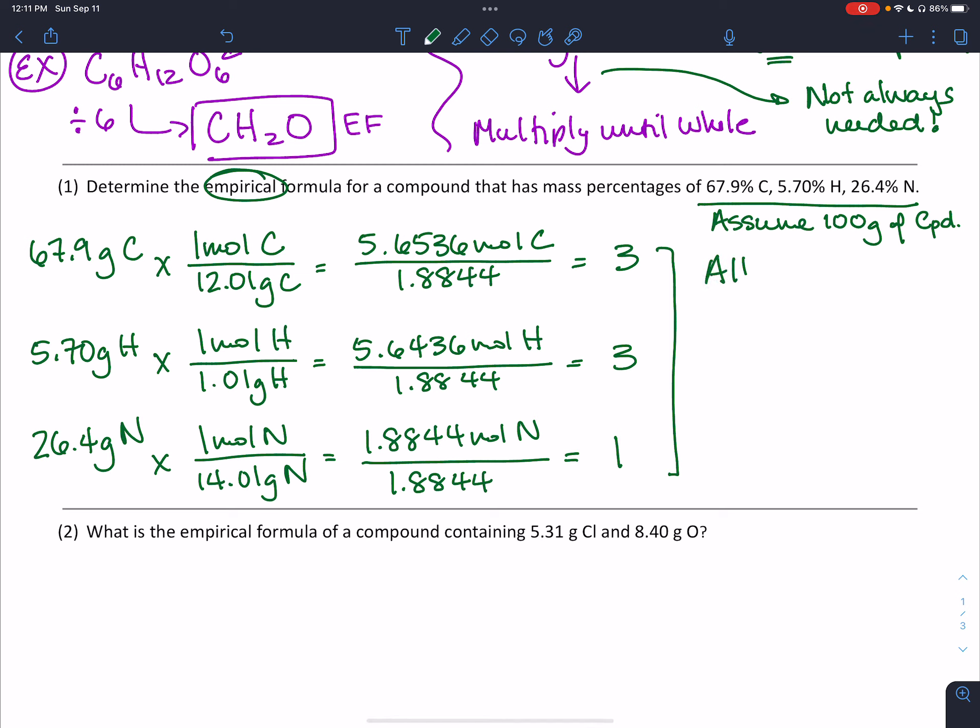These are going to be my subscripts. Since they're already whole, I'm good to go. Instead of 67.9, 5.7, and 26.4, I've converted to moles and find the empirical formula is C3H3N: three carbons, three hydrogens, and one nitrogen.